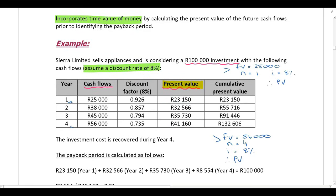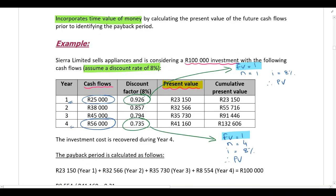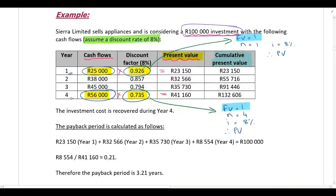Alternatively, if you prefer to use discount factors instead of a financial calculator, set the future value to 1, keep everything else the same, and that gives you the factor. Then multiply the cash flow — for example, 25,000 rand — by the factor to get the present value. You also need a cumulative present value column so we can determine how long it takes to recover the original investment cost of 100,000 rand.